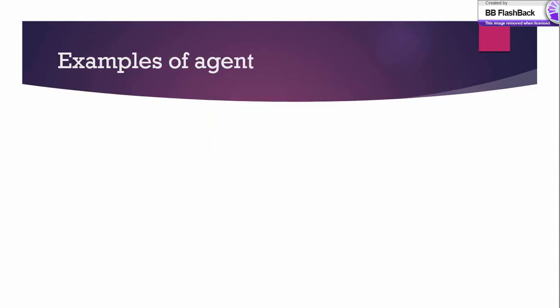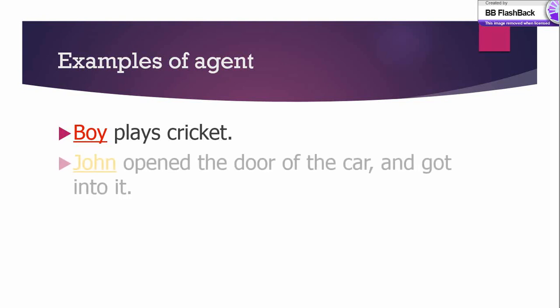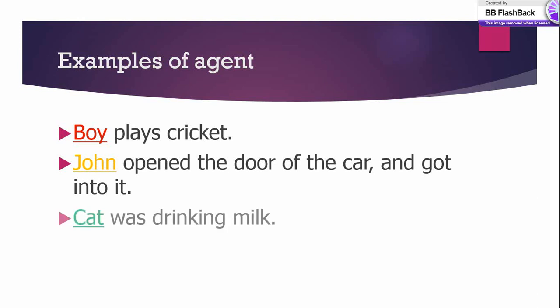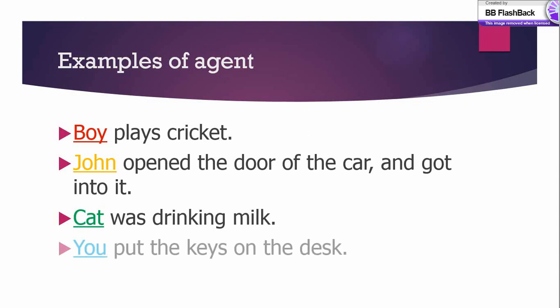Now examples of agent — everything will be clear with examples. 'A boy plays cricket' — he is an agent, he is initiating the action of playing cricket. 'John opened the door of the car and got into it' — John is performing and initiating an action. 'The cat was drinking milk' — so the cat is the agent. The agent can be human or non-human, for example 'you put the keys on the desk.'